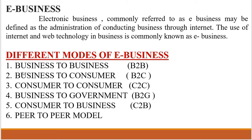B2C means business to consumer. In this model, transactions take place between consumers and business houses, and individuals are also involved in online business transactions. Next, consumer to consumer, C2C. In this model, a business transaction is carried between two individuals using a platform in the form of an intermediary. It helps the online dealing of goods or services among consumers.